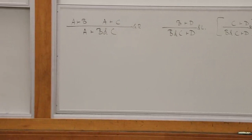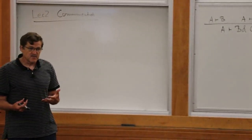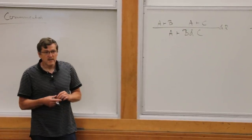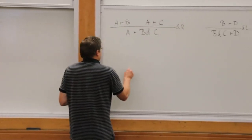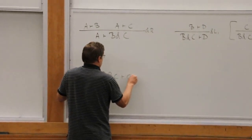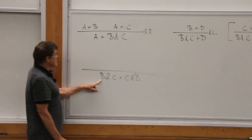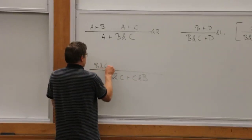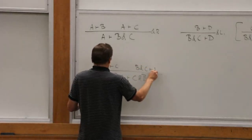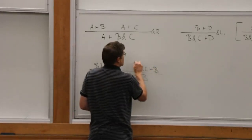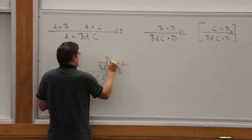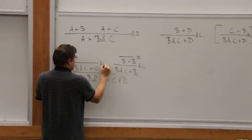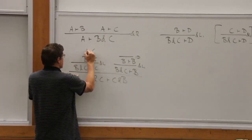If you make the system too weak, there are things you should be able to prove that you can no longer prove. Can anybody think of an example? Commutativity of 'and' — so let's try that: B with C proves C with B. Starting on the right, we need B with C proves C and B with C proves B. For the second subgoal, we can extract B from the left rule, but we're trying to prove C and we get stuck.